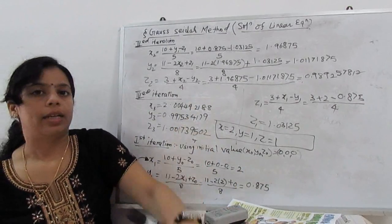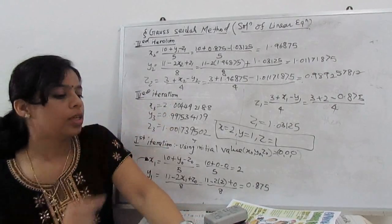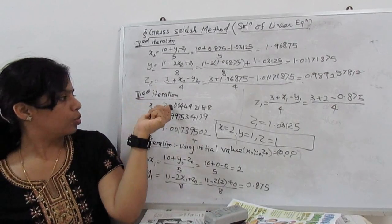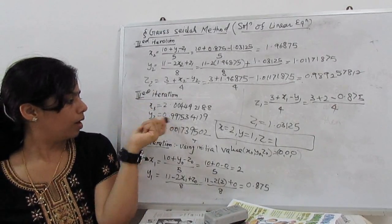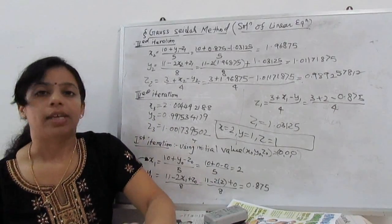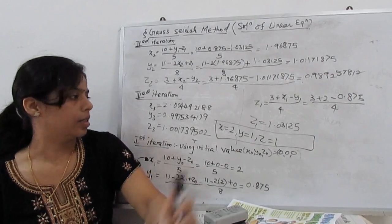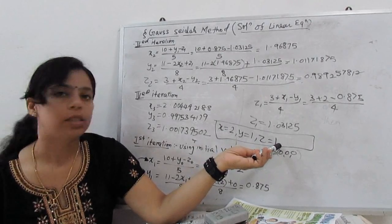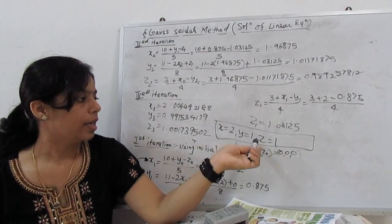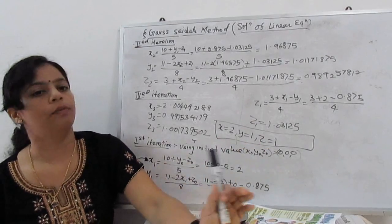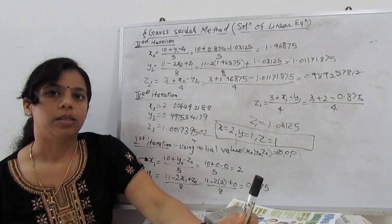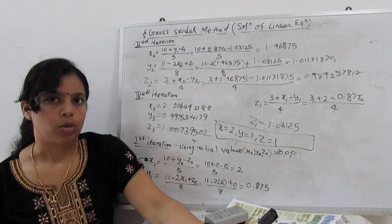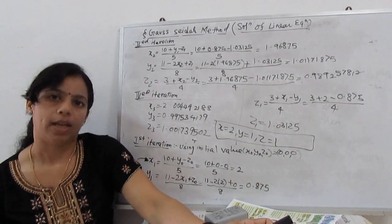These are the three iterations. When we see these iterations converge to the values X equal to 2, Y equal to 1, and Z equal to 1. Hence, we can conclude that these iterations converge to X equal to 2, Y equal to 1, and Z equal to 1. The solution of the given system of linear equations is this. That's all for the Gauss-Seidel method. Very simple. Just go step by step and be concerned about your calculation. Thank you very much.